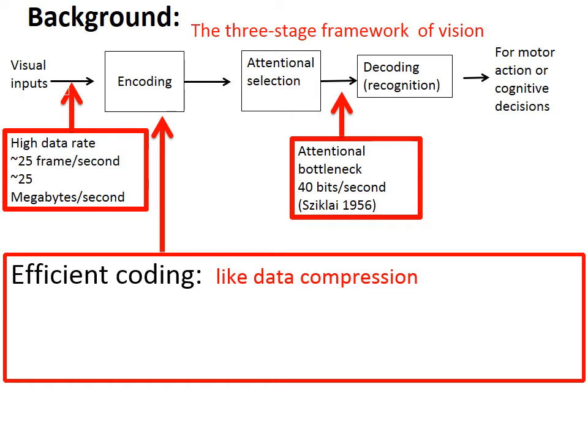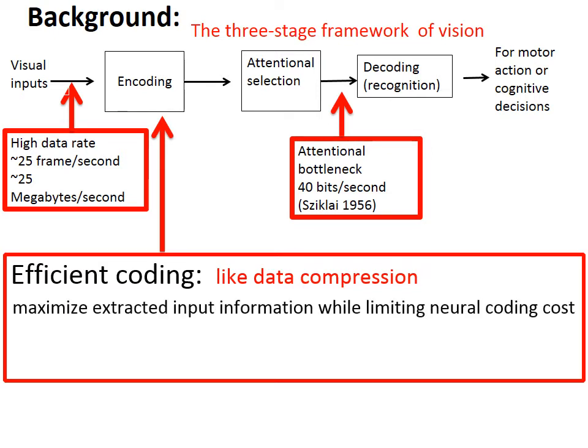However, before attention selects which information to delete, the encoding stage could represent the input information more efficiently. Therefore, efficient coding is to maximize extracted input information while limiting neural coding cost. For example, to transmit as much information as possible to the brain given the limited channel capacity at the optic nerve from the eyes to the visual cortex.